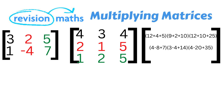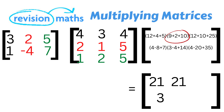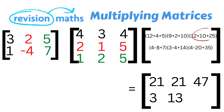We now need to simplify the matrix by adding all these numbers together. Starting with the first column: 12 plus 4 plus 5 equals 21, and 4 minus 8 plus 7 equals 3. In the second column: 9 plus 2 plus 10 equals 21, and 3 minus 4 plus 14 equals 13. In the third column: 12 plus 10 plus 25 equals 47, and 4 minus 20 plus 35 equals 19.